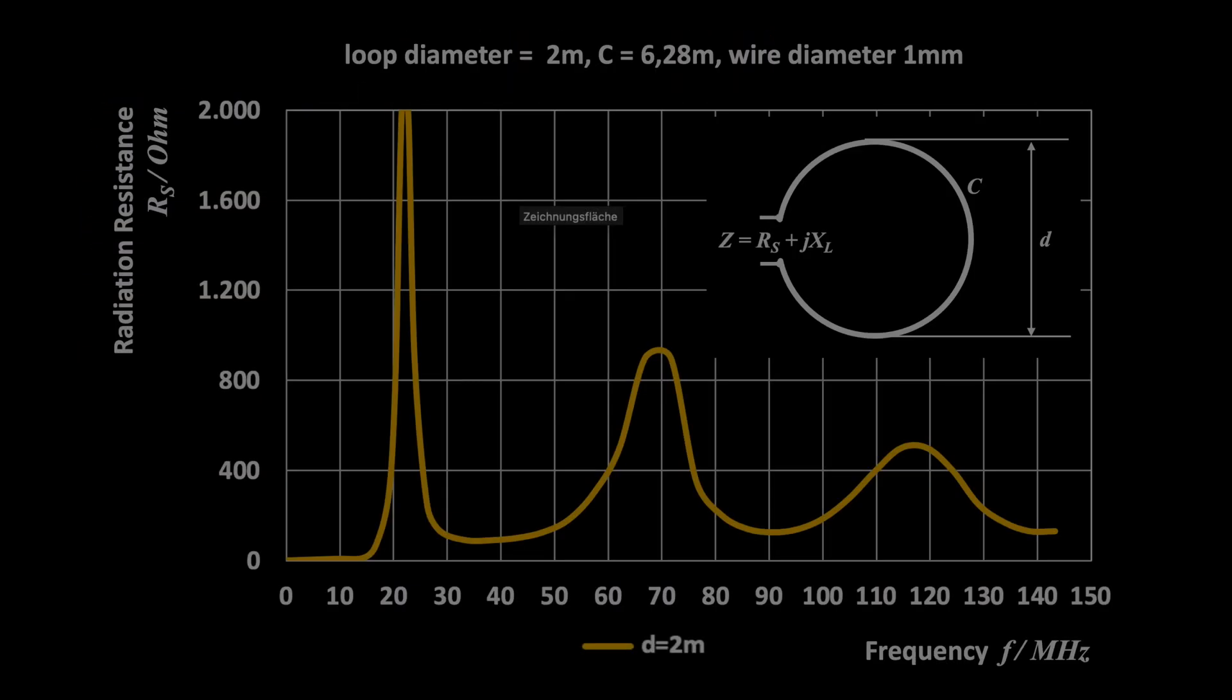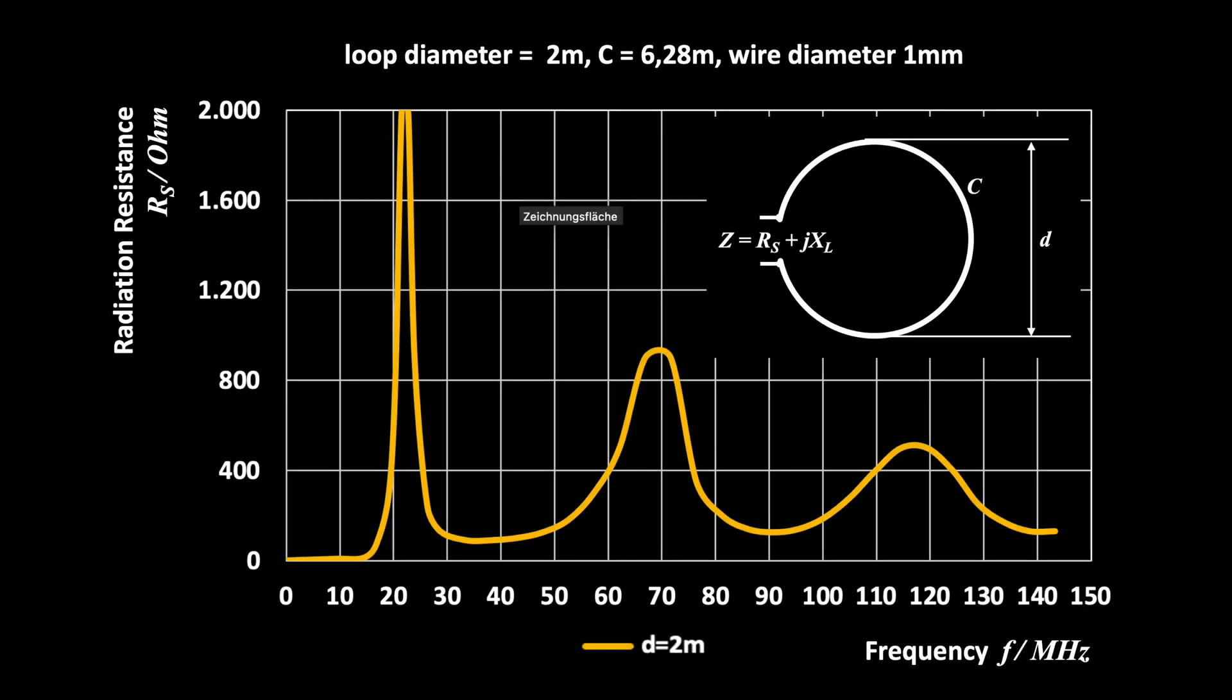Back to our 6.28 meters shortwave loop. We are now investigating a frequency range from 0 to 150 MHz. There is a resonance at 3 times the fundamental frequency, exactly at 145 MHz, explaining the good reception in the 2 meters band.